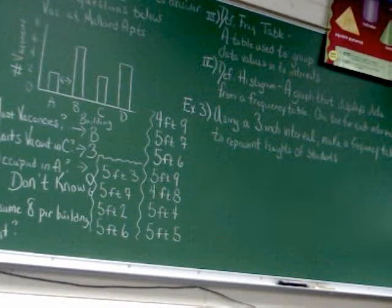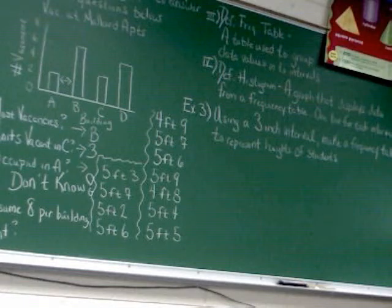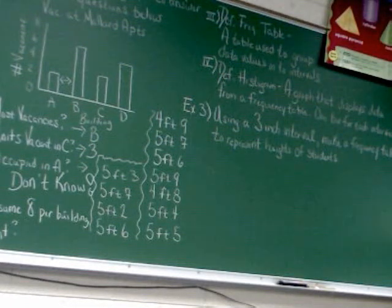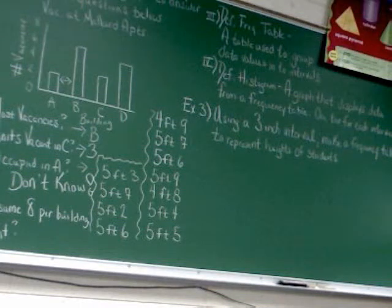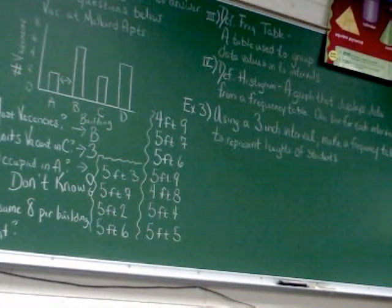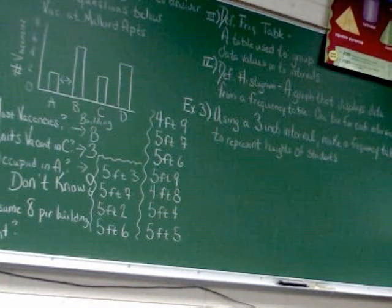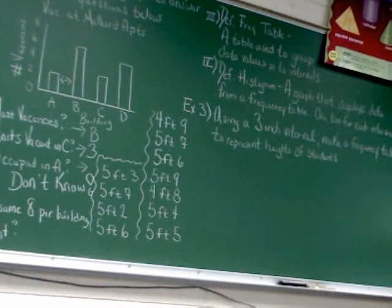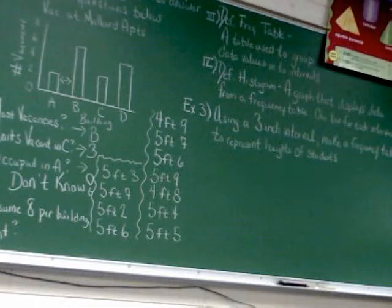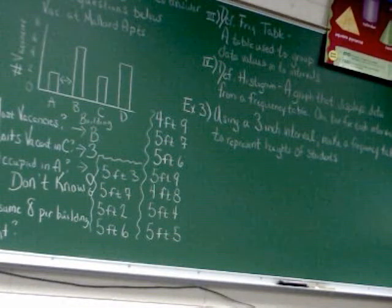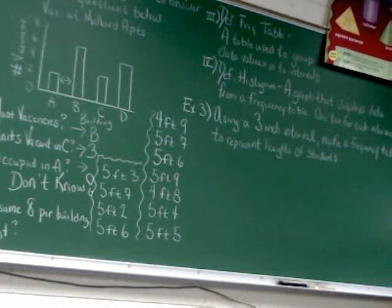Here's how you start. You have to make the frequency table first. Find your smallest height first. What's the smallest height in that entire set that's on the board? Four foot eight. From four foot eight, you're going to set up three-inch intervals.